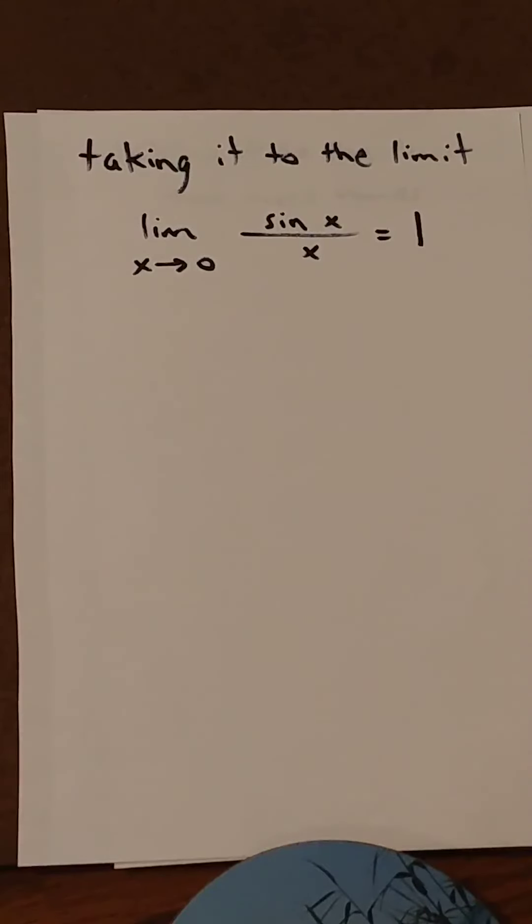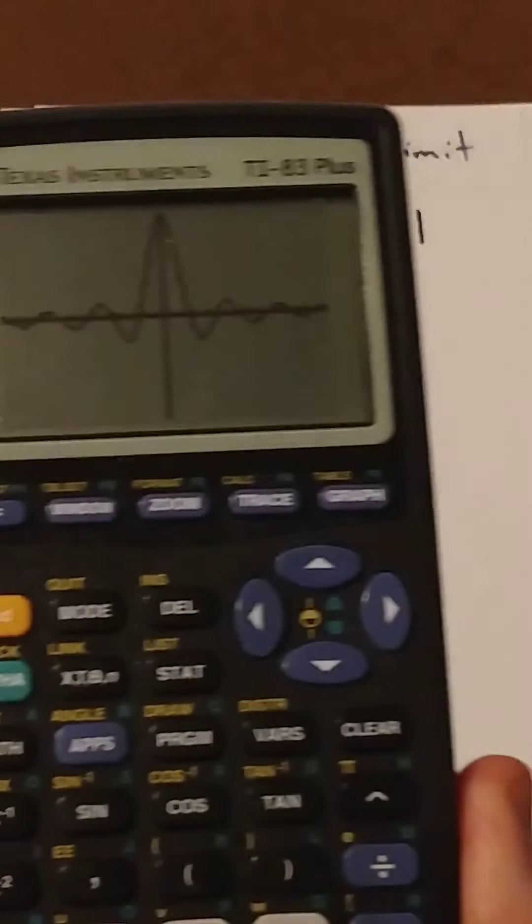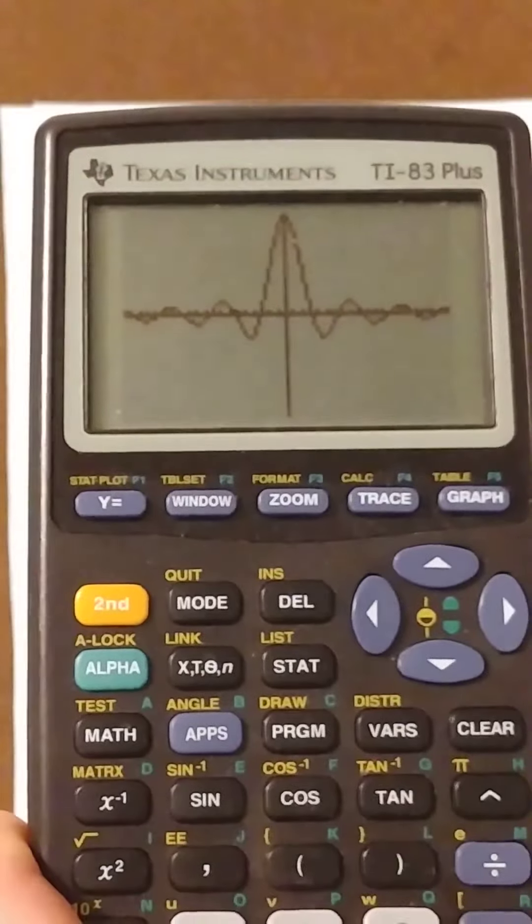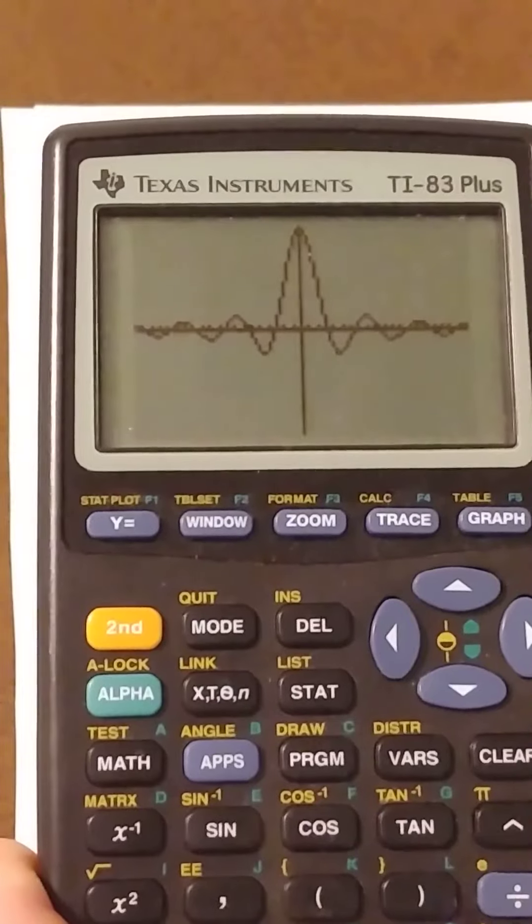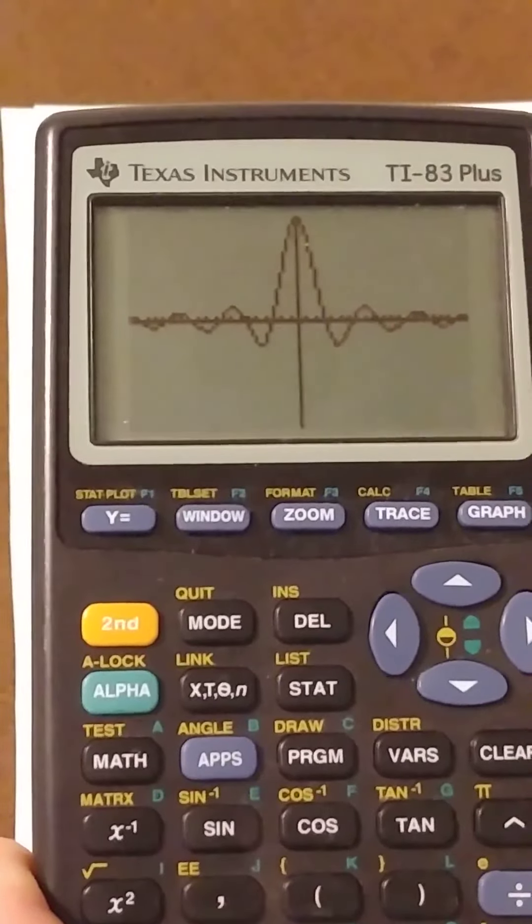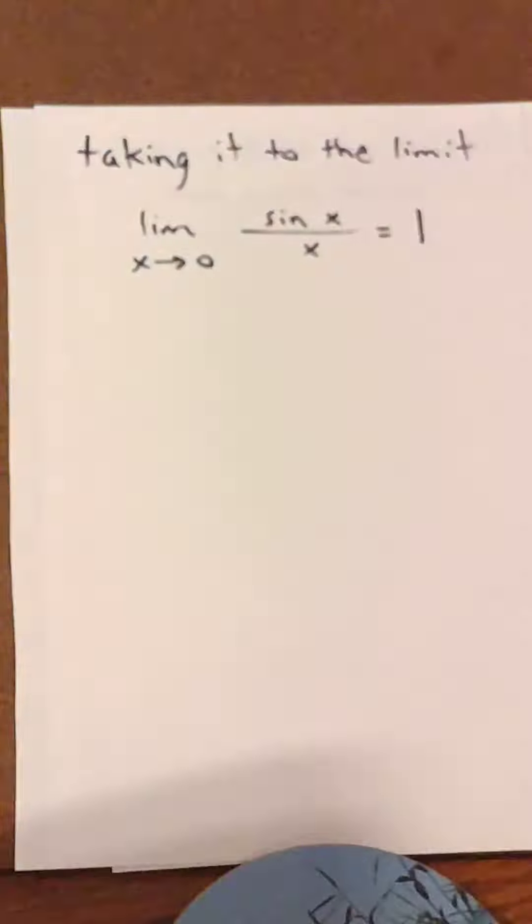That's right, because as x gets small, the sine of x is approximately x, so the x's cancel. Or you can look at the function on a graphing calculator and see that the graph approaches 1 from either side as x approaches 0. But, of course, it's undefined when x equals 0.